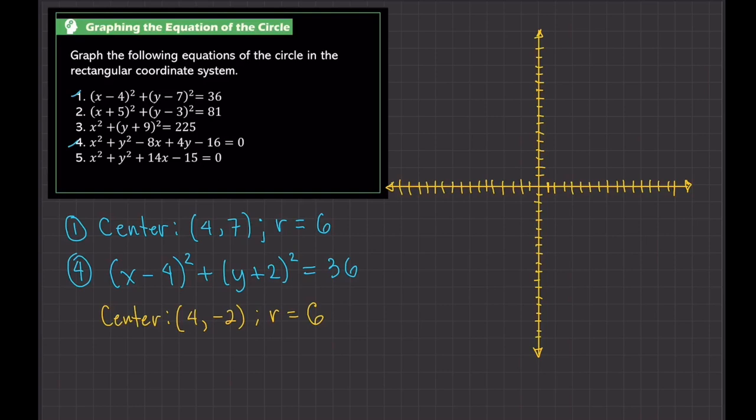the center is at (4,7). So 4 is the x coordinate, 7 is the y coordinate. Where is 4? 4 is here. So 1, 2, 3, 4. That's 4 and 7 in x. 7 in y, so 1, 2, 3, 4, 5, 6, 7. That's here. So the center is here. That's our center, (4,7).